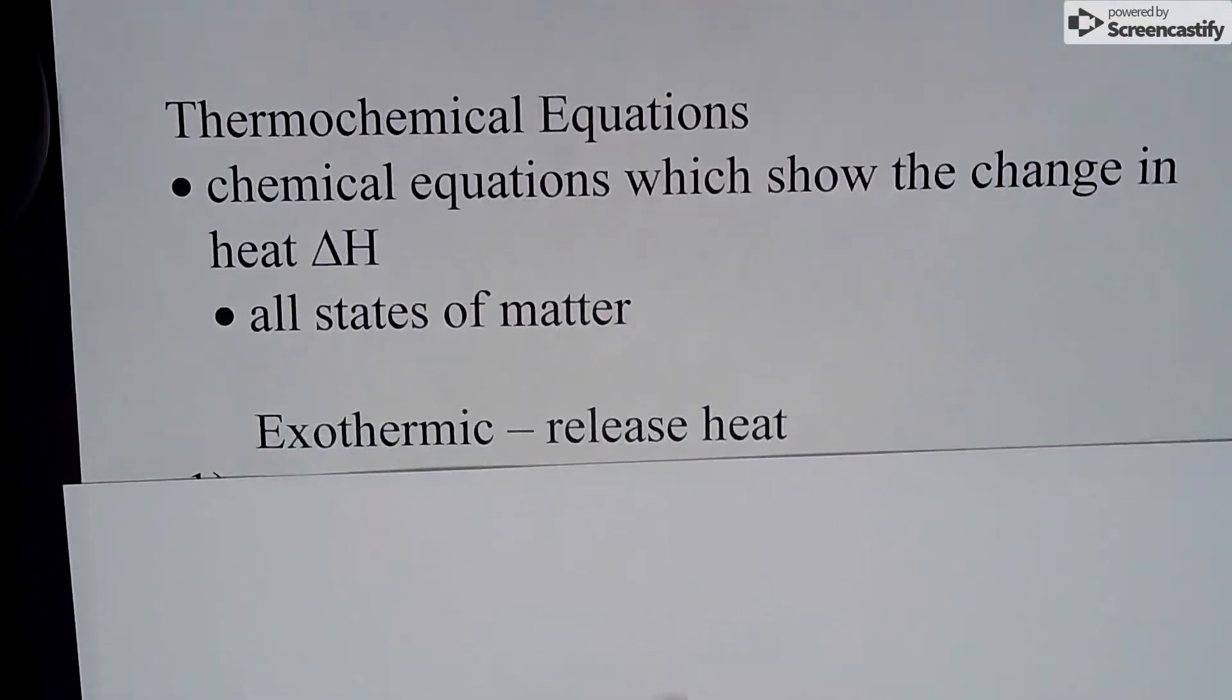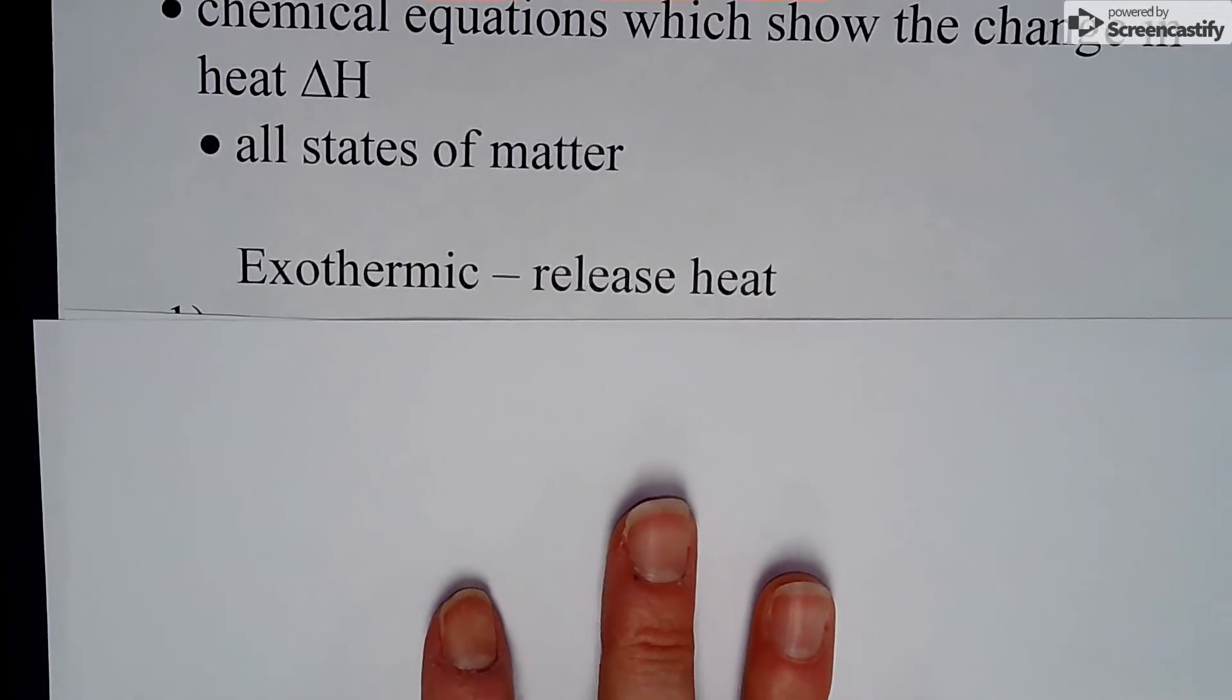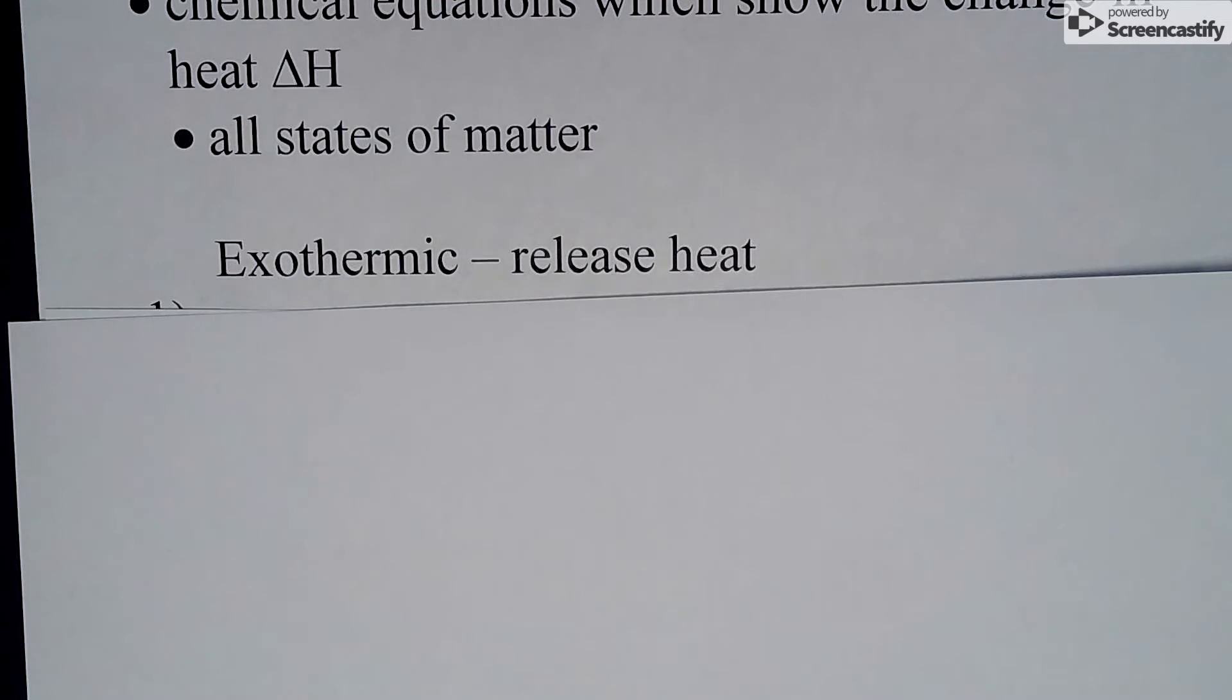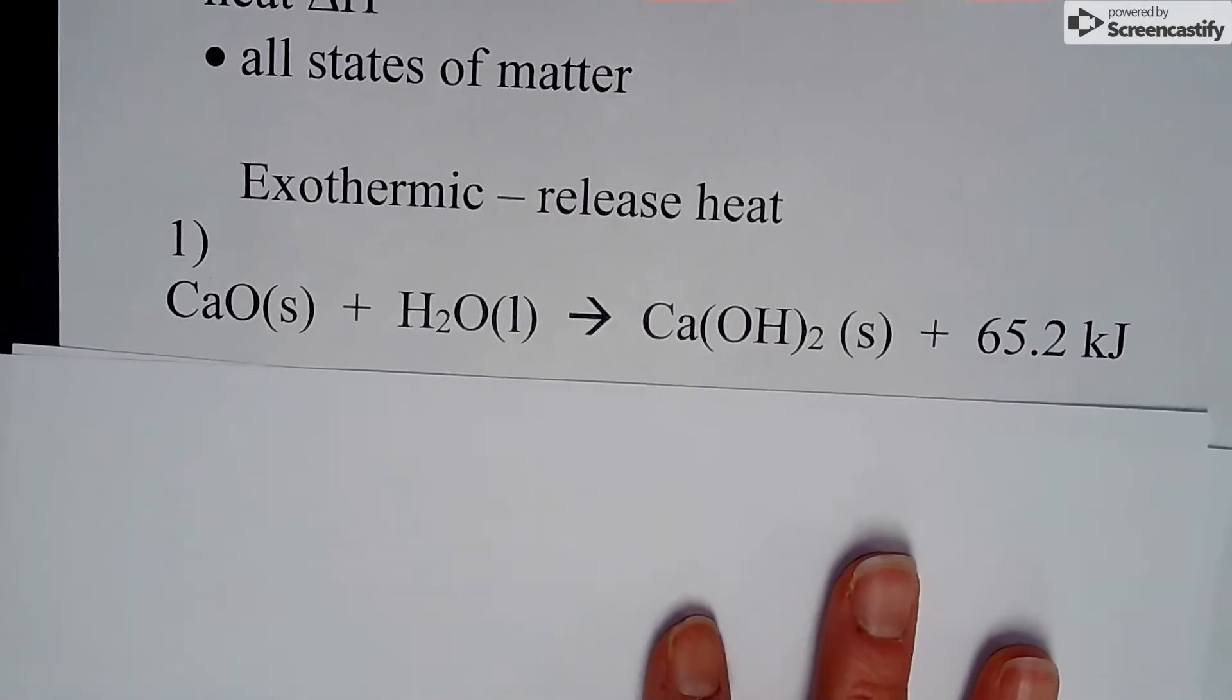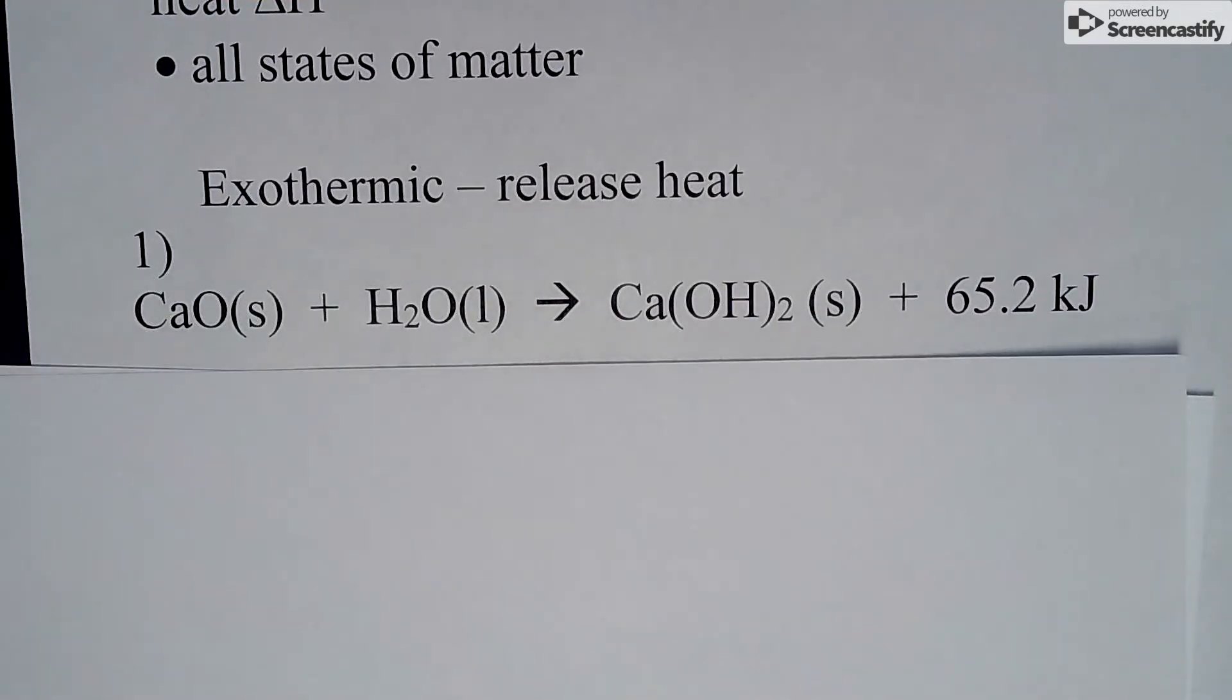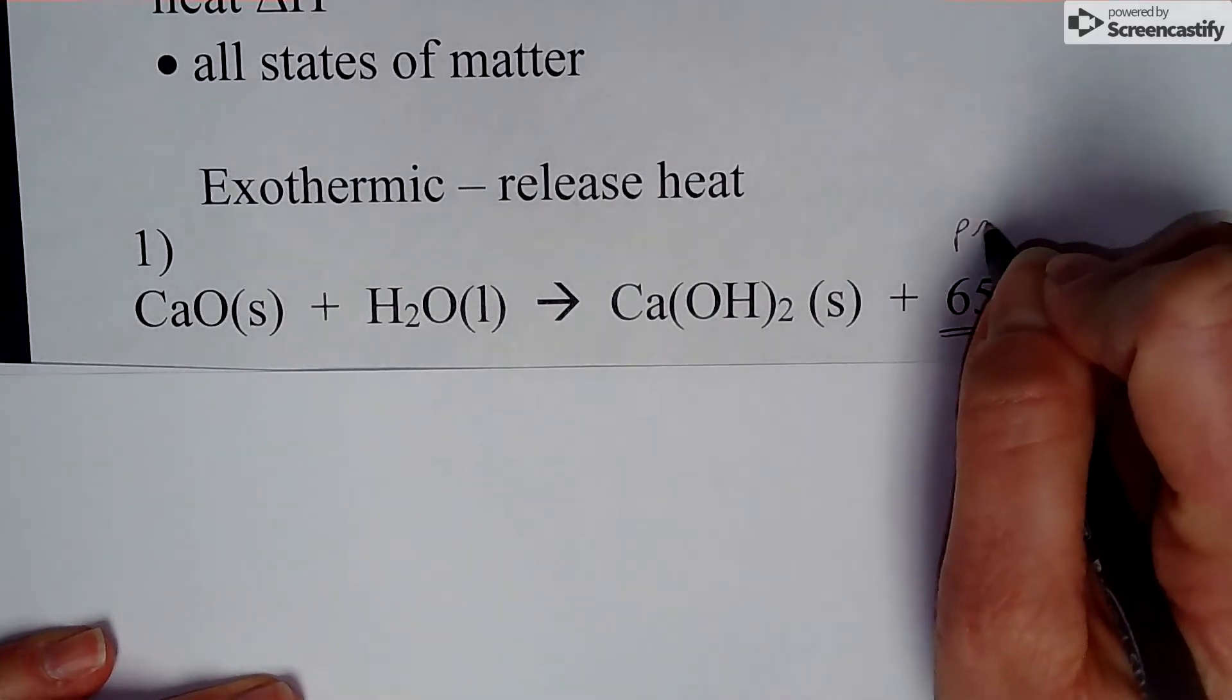With exothermic reactions, always remember that we are talking about heat being released. When heat is released, we are going to list things as negative, but we're going to show this in different ways. The first way we're going to show an exothermic reaction is by putting the heat in the reaction itself. This is calcium oxide reacting with water to produce calcium hydroxide, and you will see that the heat is listed here on the product side.